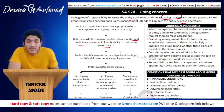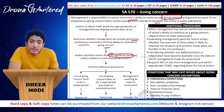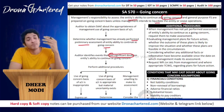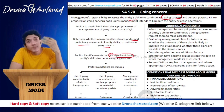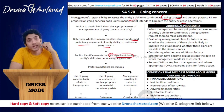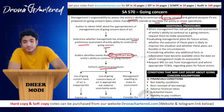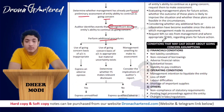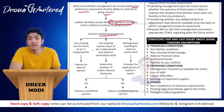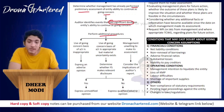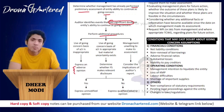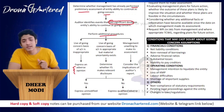If the auditor identifies events that cast a significant doubt on the entity's ability to continue as a going concern — for example, some law or regulation has been passed against the operations the entity performs — then in such a case the auditor will perform additional procedures. First, when the auditor feels that the use of going concern basis of accounts is inappropriate, the auditor will express an adverse opinion.